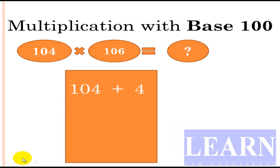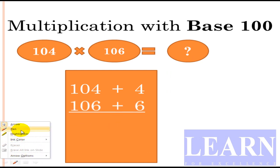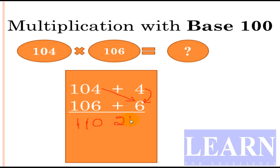Now how to write this? 104 plus 6 gives 110, that is nothing but 110. And 4 times 6 is 24. So the final answer is 11024. It's very easy, right?